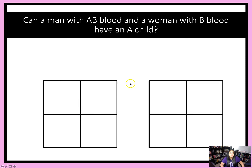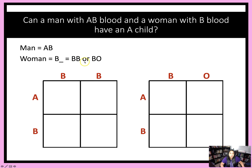So let's try an example. We're going to see if a man with AB blood and a woman with B blood can have a child with A blood type. First we're going to write down what we know. We know the man is AB and we know the woman is B, but we don't know her genotype — she could be BB or BO. So we're going to try out both Punnett squares to see if it's possible for them to have a child with A blood type. For the first Punnett square we're going to use the homozygous blood type B, and for the second we're going to use the heterozygous.